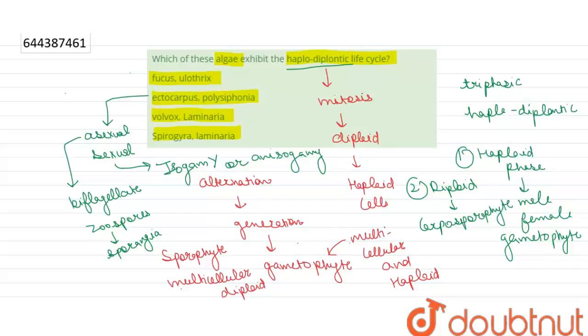And the third phase, diploid face, is represented by tetrasporophyte. So Ectocarpus and Polysiphonia exhibit the haplodiplontic life cycle. That's why the right option of this question will be option number two.